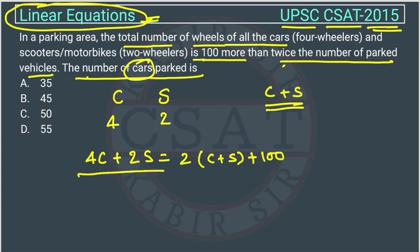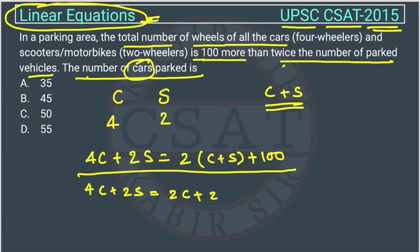If you make this equation, you can solve it very easily. This becomes 4C plus 2S equal to 2C plus 2S plus 100. The 2S cancels on both sides, and 2C goes to the other side, so it becomes 4C minus 2C equals 2C equals 100.